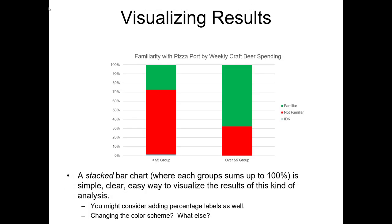How do we typically visualize results of a statistical test? A stacked bar chart is a common way to show two proportions, or sometimes a simple bar chart between two groups showing the relevant percentage. In the example here, green represents the percentage of each group familiar with Pizza Port. There's also a small group in the less than five dollars category that didn't know if they were familiar. We could have meaningful discussions about modifying this chart — adding percentage labels to relevant cells, or changing the color scheme, since bright red and green isn't always the most attractive or appropriate choice.